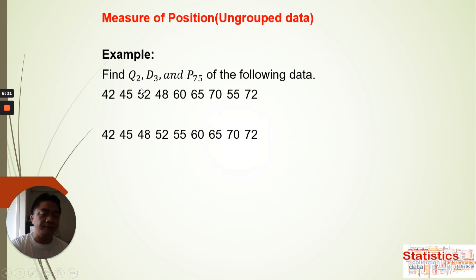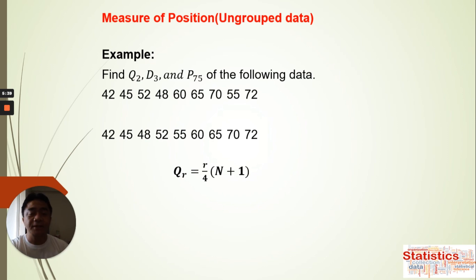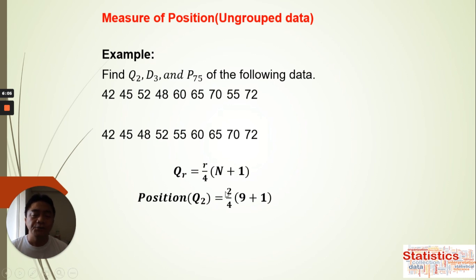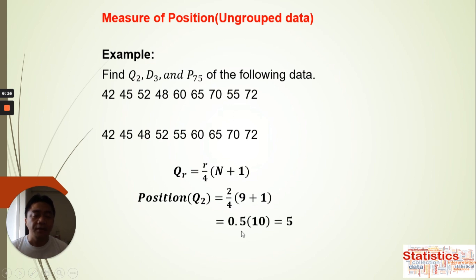We start with Q2. The formula is Qr = (r/4) × (n + 1). How many data values do we have? Counting: 1, 2, 3, 4, 5, 6, 7, 8, 9 — so n = 9. We substitute: r = 2, so Q2 = (2/4) × (9 + 1) = 0.5 × 10 = 5. Therefore, Q2 is at position 5.